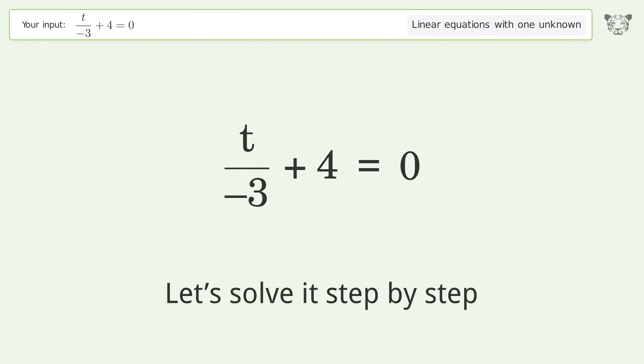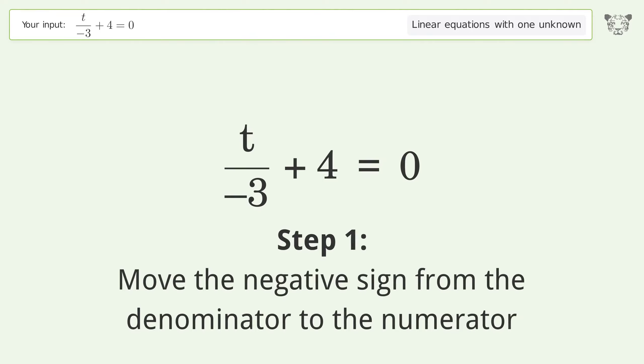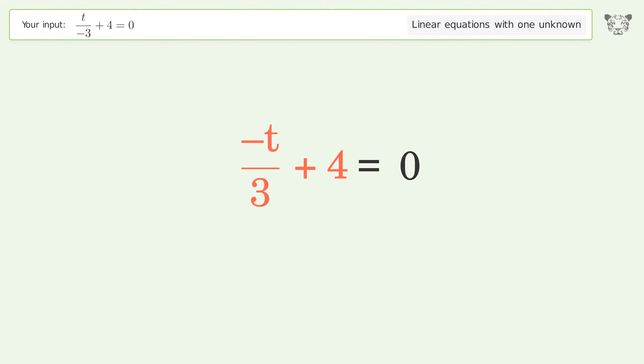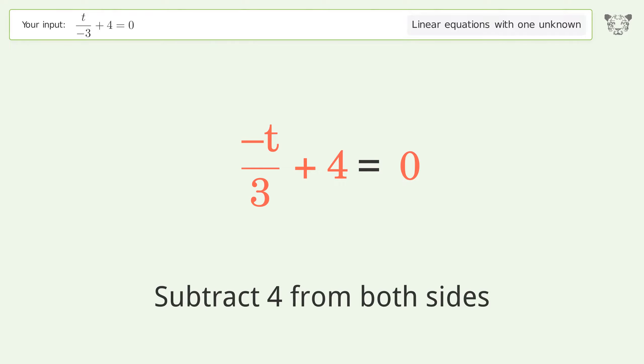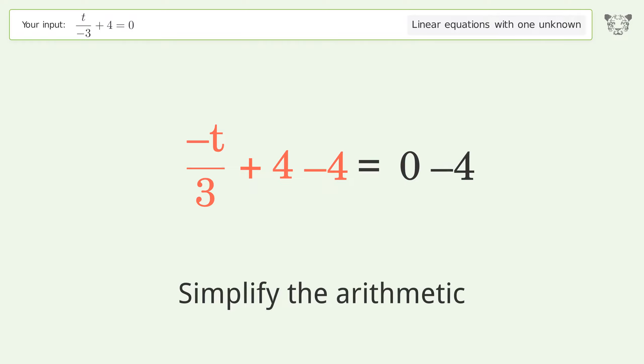Let's solve it step by step. Move the negative sign from the denominator to the numerator. Group all constants on the right side of the equation. Subtract 4 from both sides. Simplify the arithmetic.